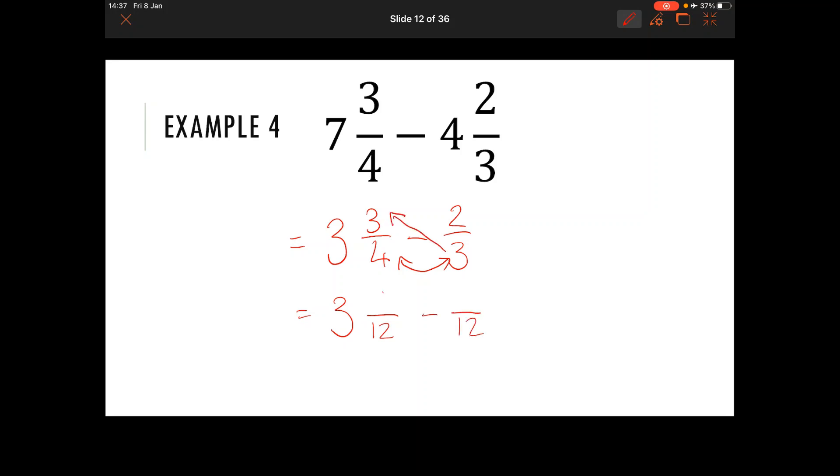Three brought up to that other three is going to make nine and four multiplied by two is eight. So now I've got three and nine twelfths take away eight twelfths. And that's going to leave us with three and one twelfth which we cannot simplify.